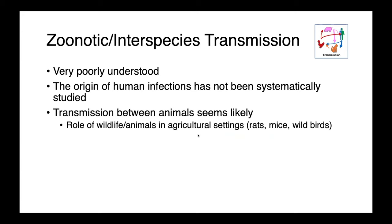Zoonotic transmission is very poorly understood. We do not know the origin of human infections with Brachyspira species. Between animals, transmission seems likely. The role of wildlife in agricultural settings has been widely speculated upon — whether rats, mice, or wild birds — but we really lack very clear data.